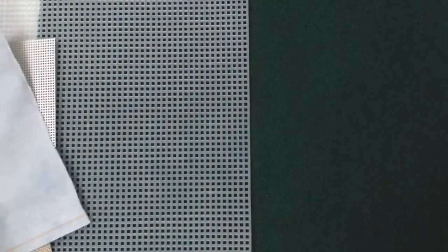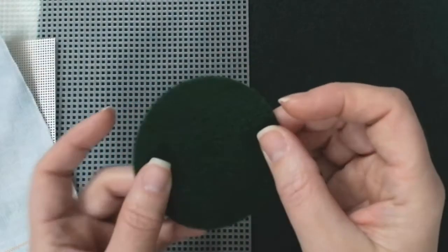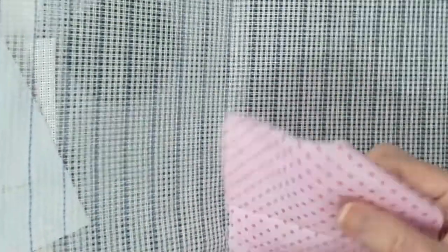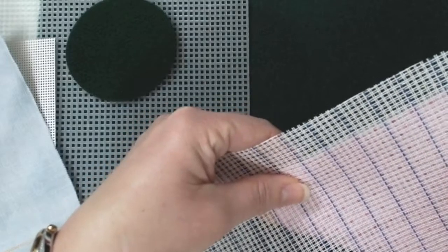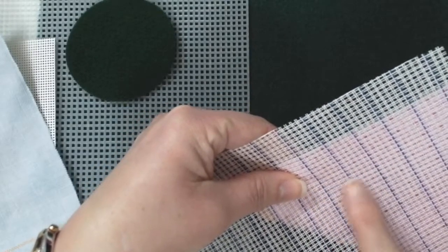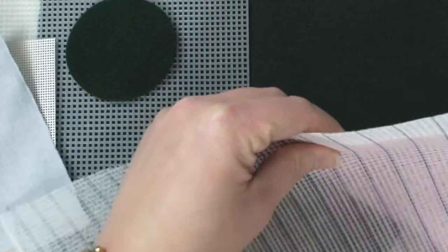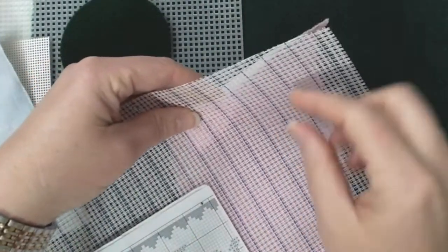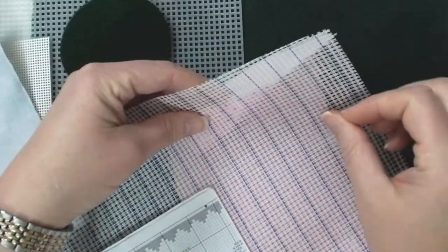You can even sew on felt or even high quality quilting cottons with the use of what's called waste canvas. This can also be cut to size, basted onto your fabric, embroider whatever design you want using your pattern and following the directions on your pattern. And then you tear this away when you're done.